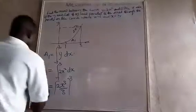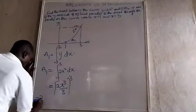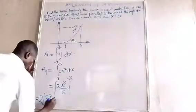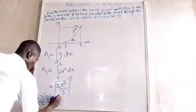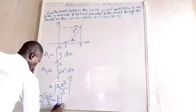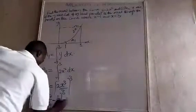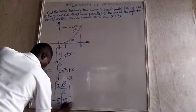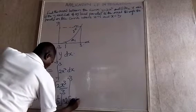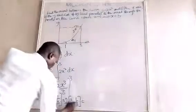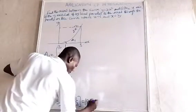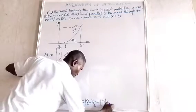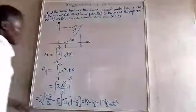So we compute: 2 times 27 over 3 minus 1 over 3, which gives us 2 times 9 minus 1 over 3. This is 17 minus 2 over 3, which is 17 and 1 over 3. So that is A1.